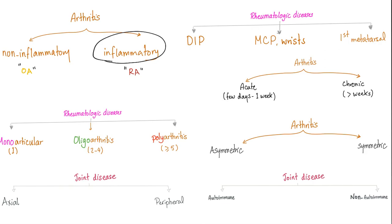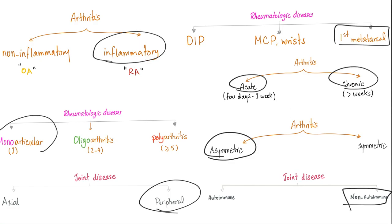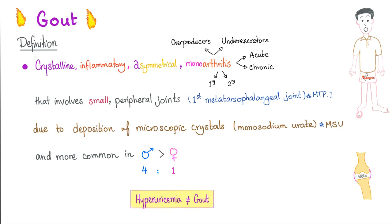Gout is an inflammatory arthritis. It affects the first metatarsophalangeal joint. It could be acute or chronic. It's asymmetrical, usually monoarticular, and peripheral. It's not an autoimmune disease. Gout is a crystalline inflammatory asymmetrical monoarthritis that involves small peripheral joints, especially the big toe, due to deposition of monosodium urate crystals, and it's more common in males than females.